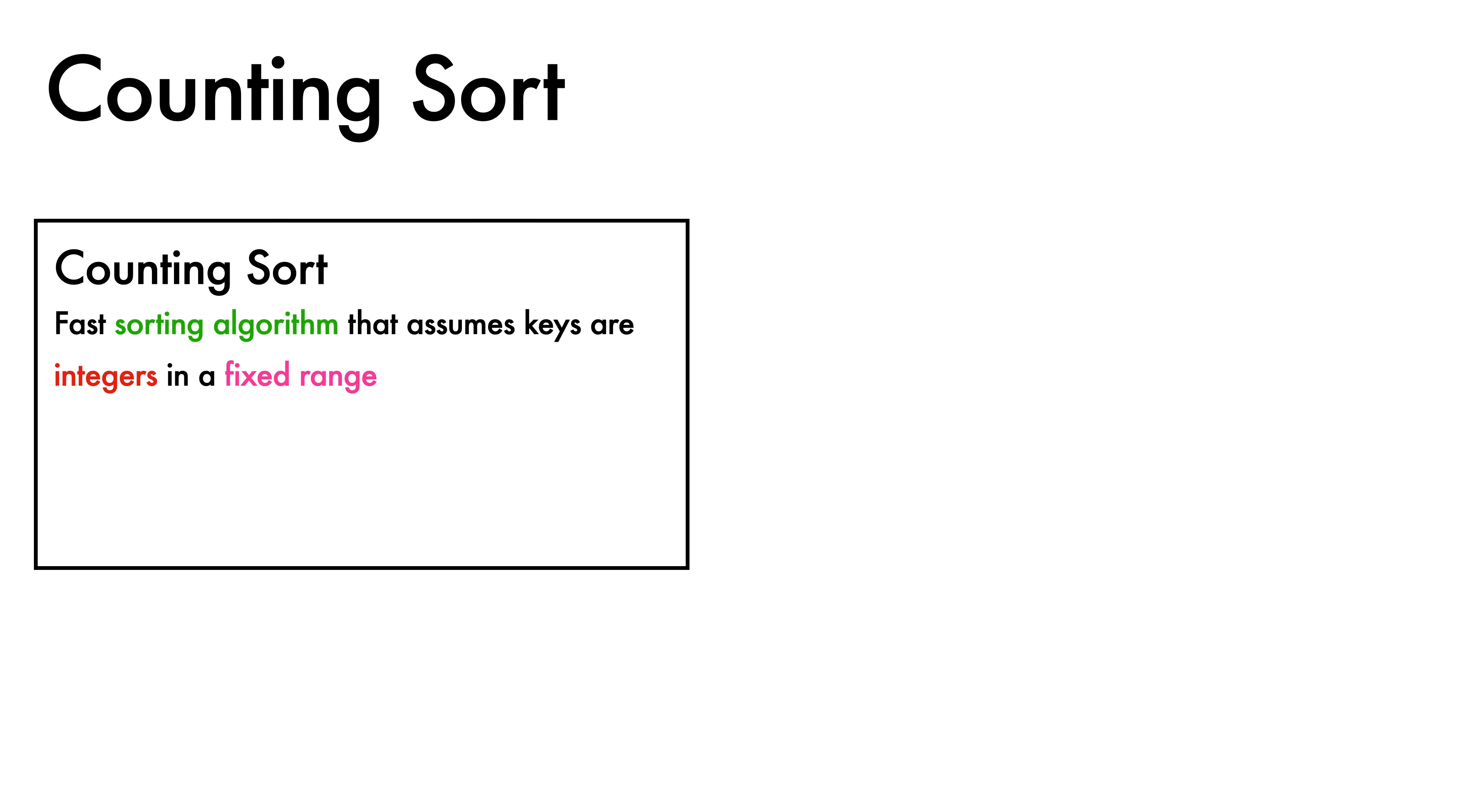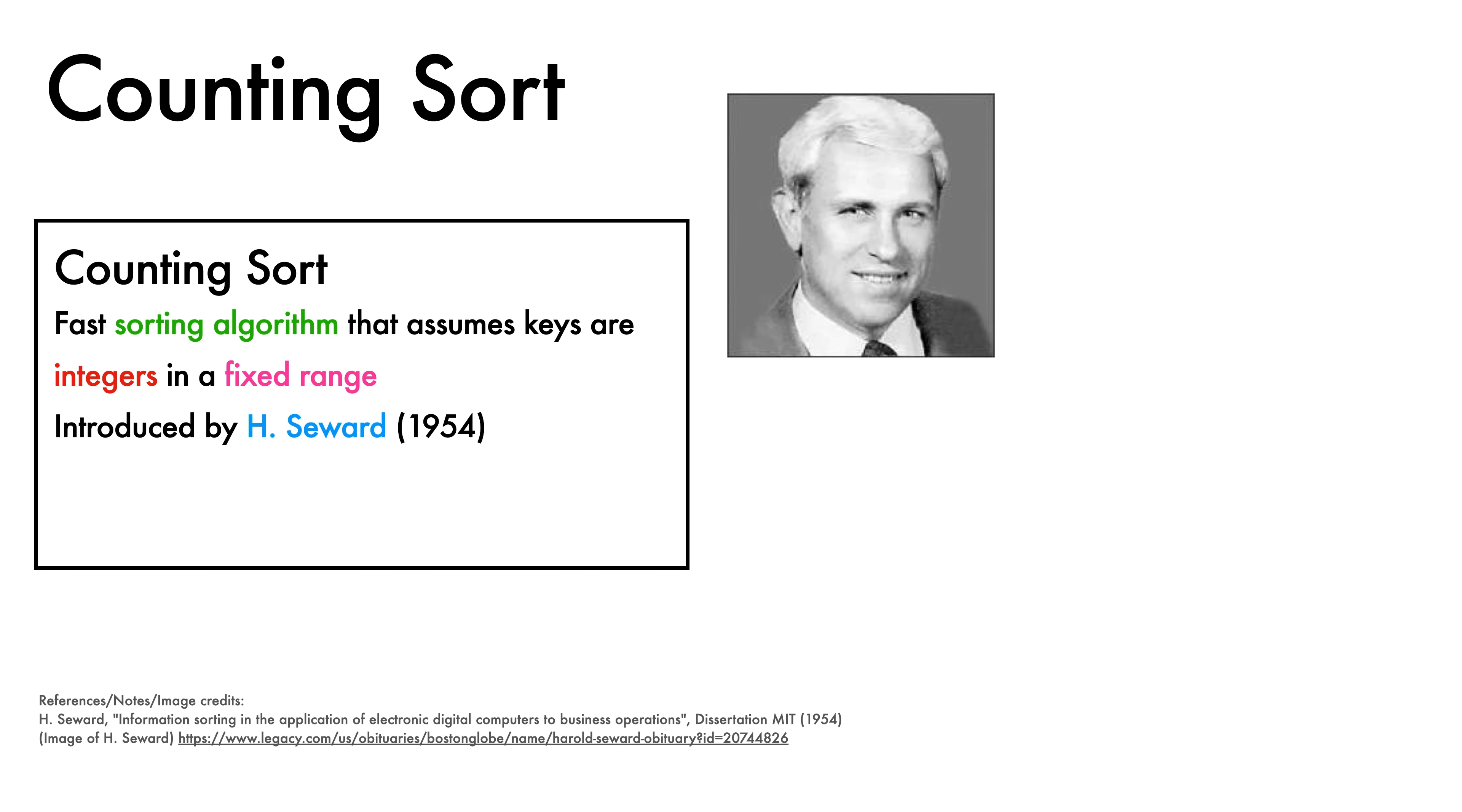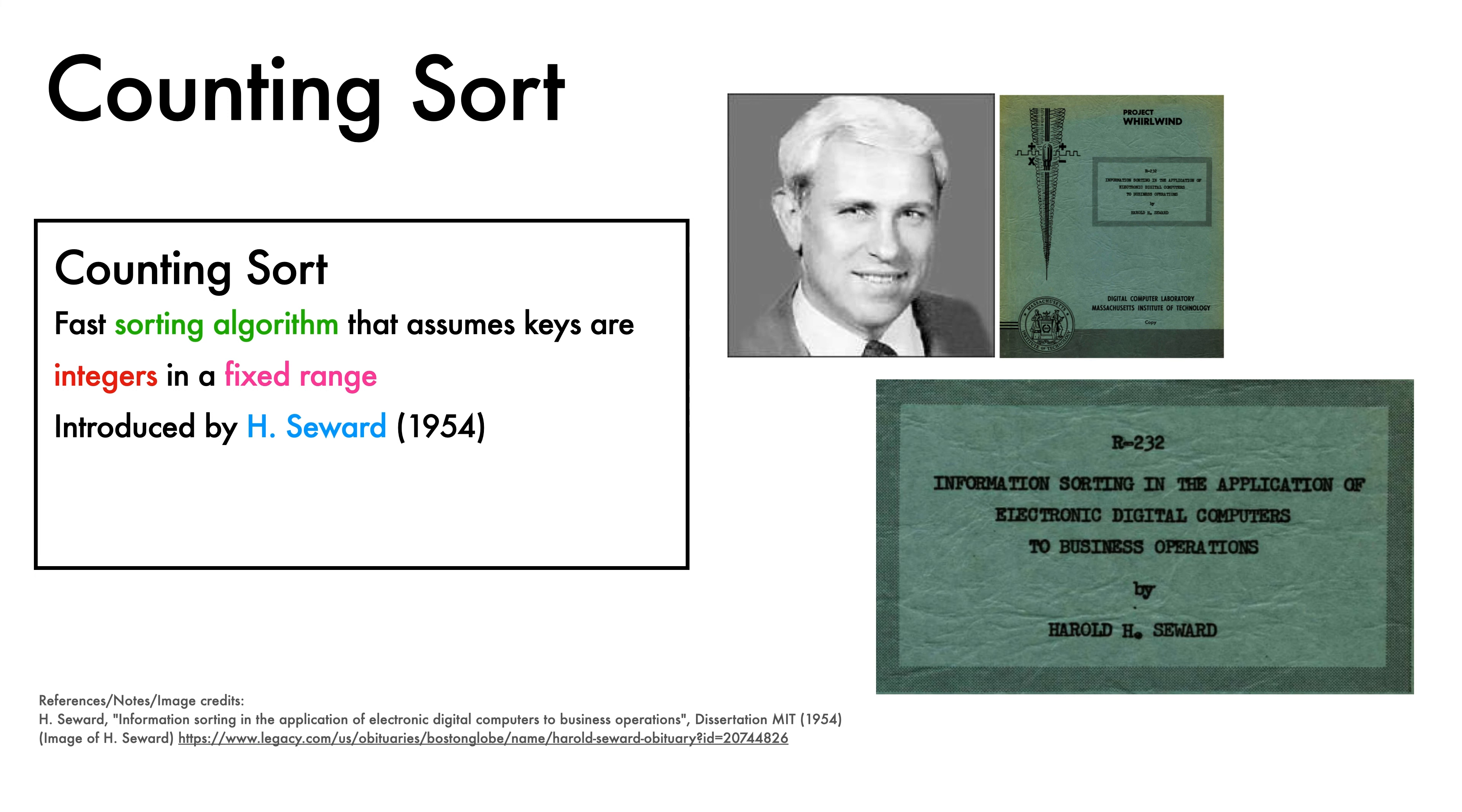Counting Sort is a fast sorting algorithm that assumes keys are integers that fall within a fixed range. It was introduced by Harold Seward under the name Floating Digital Sort in his 1954 master's thesis at MIT, entitled Information Sorting in the Application of Electronic Digital Computers to Business Operations, as part of the wonderfully named Project Whirlwind.